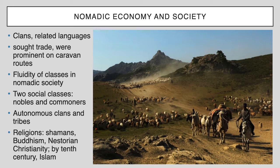One thing different in a nomadic society versus a settled society is that social class is a lot more fluid — you could move up or down. In a nomadic society you really only have two classes: nobles and commoners. There's not much distinction between the two in how they dress because they all live a certain lifestyle. When you're a nomad, you pack your belongings onto pack animals and move across thousands of miles of terrain — you're not going to acquire a large house or property the way you would in a settled society. So class distinction wasn't as much, and these clans tended to be autonomous, governing themselves.